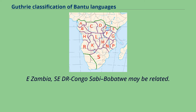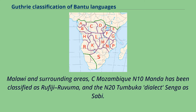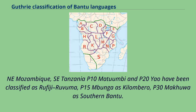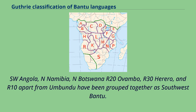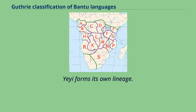Zone M covers eastern Zambia and southeastern D.R. Congo. Sabi-Babatwe may be related. Zone N covers Malawi and surrounding areas, and central Mozambique. N10 Manda has been classified as Rufiji-Ruvuma, and the N20 Tambuka dialect Sanga as Sabi. Zone P covers northern Mozambique and southeastern Tanzania. P10 Machu-Umbai and P20 Yao have been classified as Rufiji-Ruvuma, P15 Umbunga as Kalambero, and P30 Makua as Southern Bantu. Zone R covers southwestern Angola, northern Namibia, and northern Botswana. R20 Ovambo, R30 Herero, and R10 apart from Umbundu have been grouped together as Southwest Bantu. YI forms its own lineage.